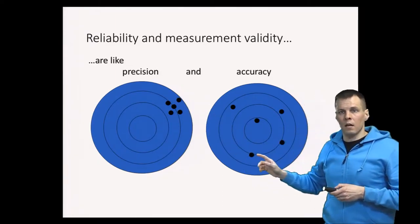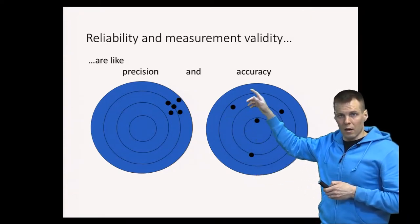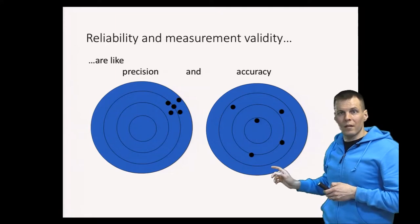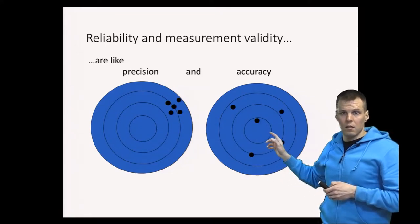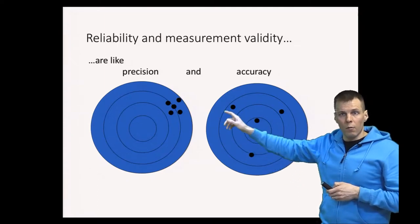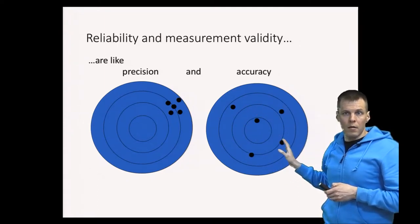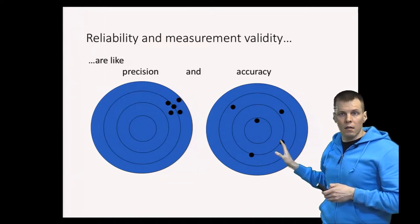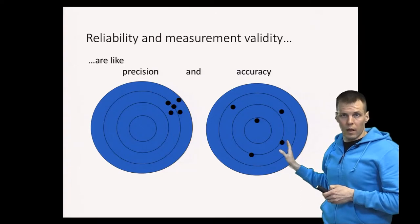Then this is another shooter which is not very precise so the hits are all over but the sights are correct, so on average he is hitting the target. So this is not reliable but valid, and there is some disagreement in the literature whether you can have validity without reliability.